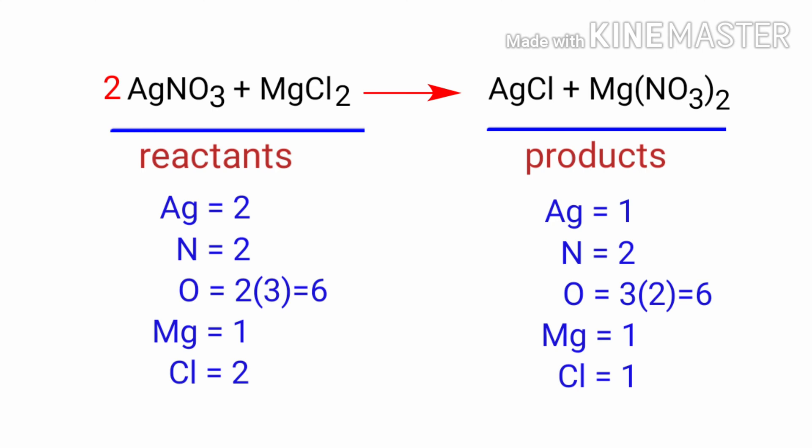The nitrogen and oxygen atoms are balanced. Now we need to balance our silver and chlorine atoms. To do this, we need to put a coefficient of 2 in front of AgCl.